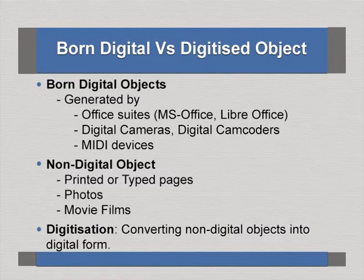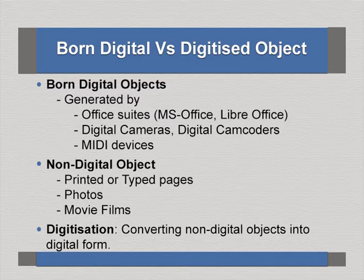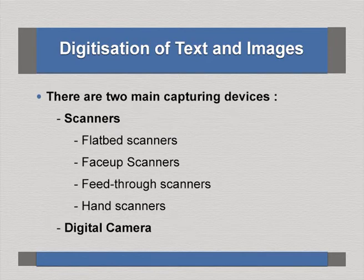If you have photographs taken with ordinary non-digital cameras, you may have to digitize the images. Similarly, old films require digitization. So, digitization is nothing but the process of converting non-digital objects into digital form so that they can be archived on a repository.